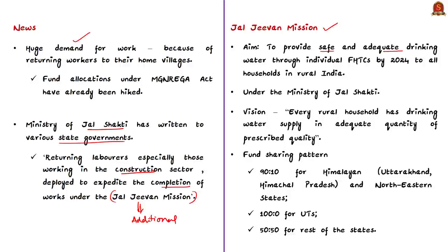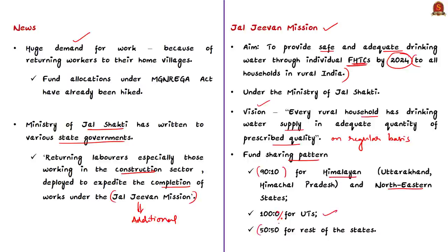Jal Jeevan Mission aims to provide safe and adequate drinking water through individual functional household tap connections to all households in rural areas, with the mission target to achieve this by 2024. The vision of the mission is that every rural household has a drinking water supply in adequate quantity of prescribed quality on a regular basis, improving the living standards of rural communities. The fund sharing between centre and states is 90:10 for Himalayan and northeastern states, 100% for union territories, and 50:50 for the rest of the states. This scheme is implemented by the Ministry of Jal Shakti.